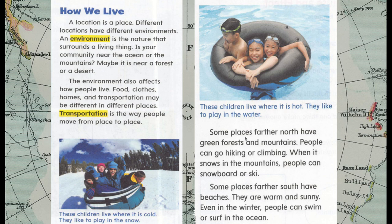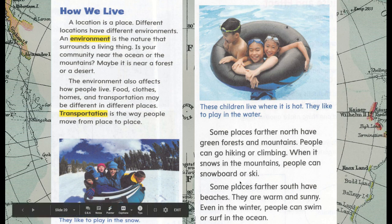Some places farther north have green forests and mountains. People can go hiking or climbing. When it snows in the mountains, people can snowboard or ski. Some places farther south have beaches. They are warm and sunny. Even in the winter, people can swim or surf in the ocean.